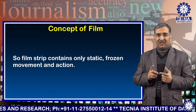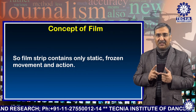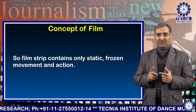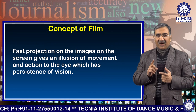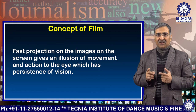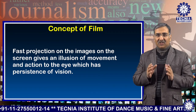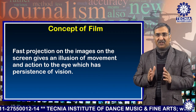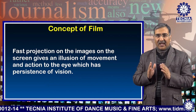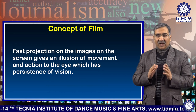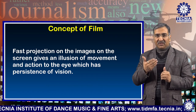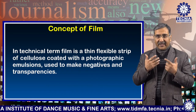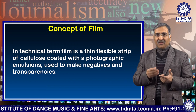So, film strip contains only static, frozen movement and action. Fast projection of the images on the screen gives an illusion of movement and action to the eye which has persistence of vision.